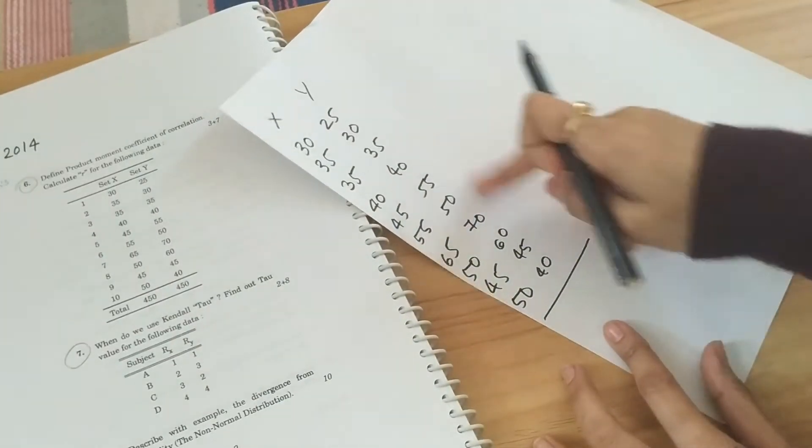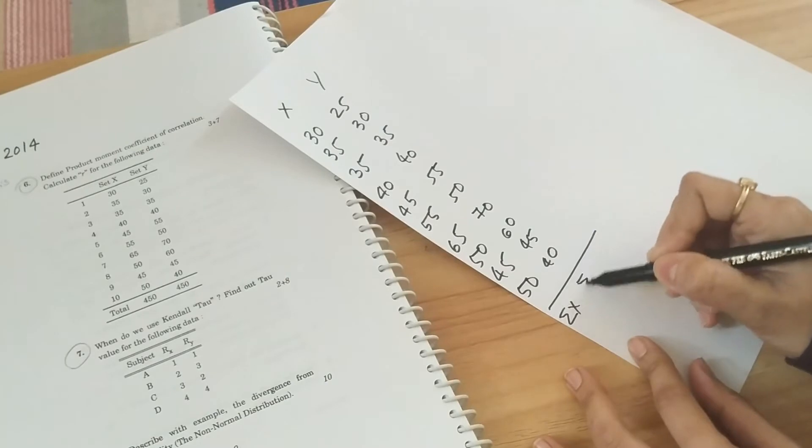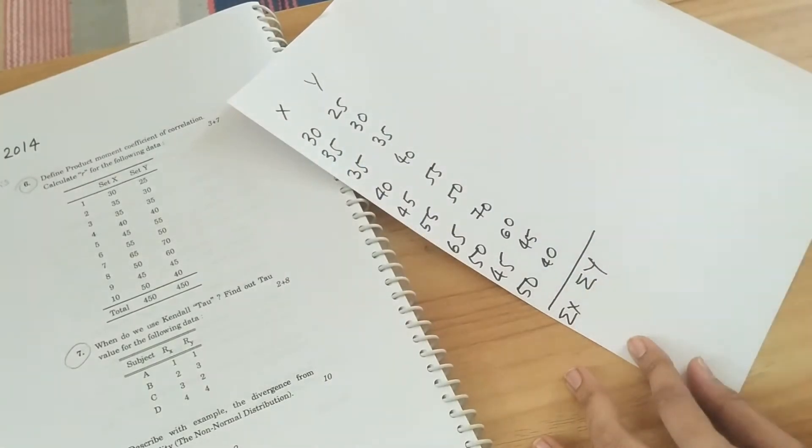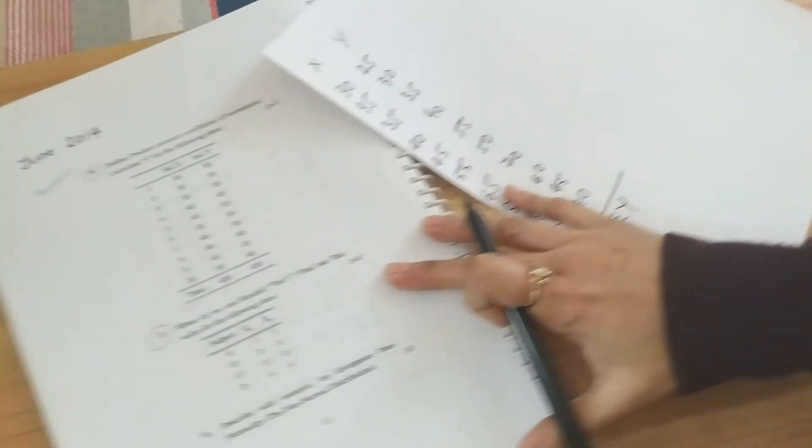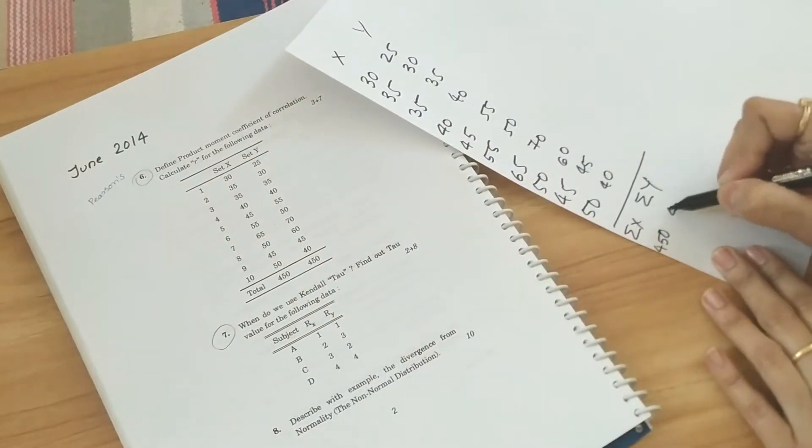So now I have written both elements. I am finding the summation of x and summation of y. So total them. You can see the total is already given here, 450 and 450.